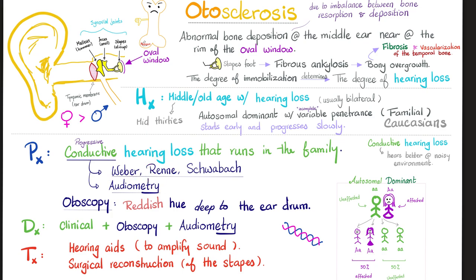Physical exam: go back to your Rinne, Weber, and Schwabach's tests, and you'll find the patient has conductive hearing loss, usually in both ears — just like I develop osteoarthritis in both knees. A more accurate test is audiometry, which will confirm bilateral conductive hearing loss. Family history of similar symptoms is also found. Looking into the ear with otoscopy, you may find a reddish hue deep to or behind the tympanic membrane. Diagnosis is made clinically with otoscopy and audiometry. Management includes hearing aids to amplify sound and surgical reconstruction of the stapes foot process.